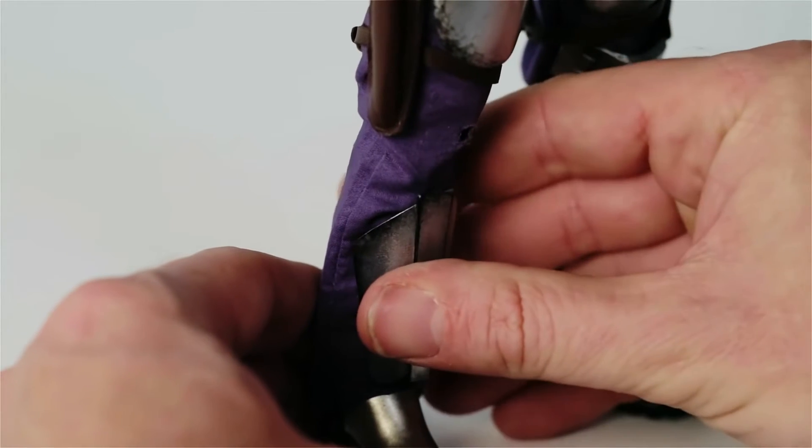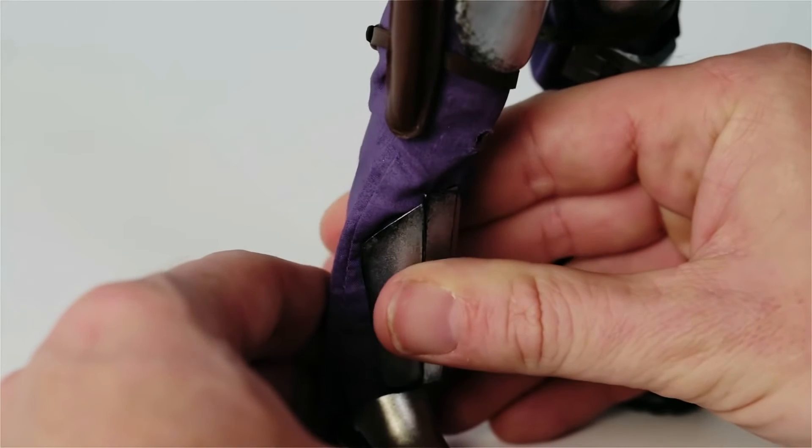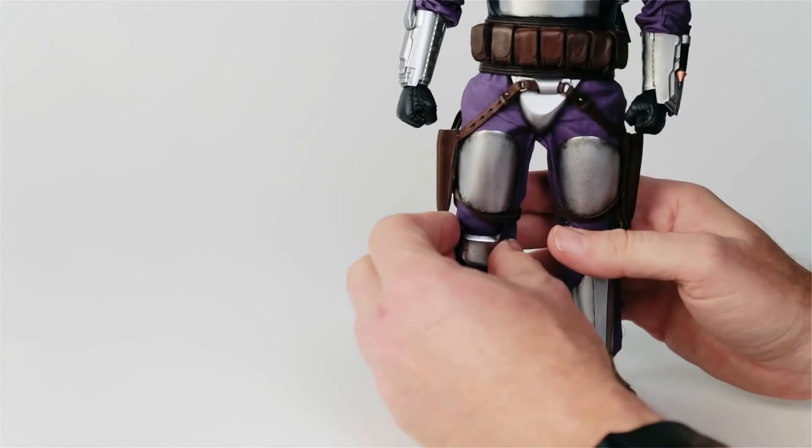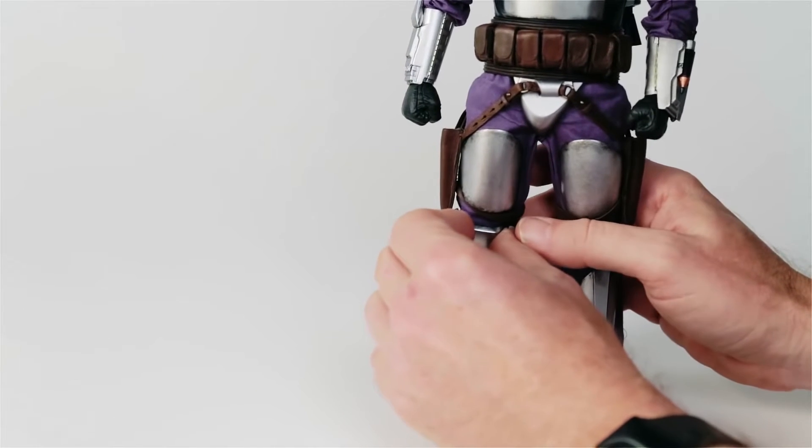The armor pieces on the knees and shins have keys that fit into the legs. Be careful when holding the kneecap armor as the sides are fragile.